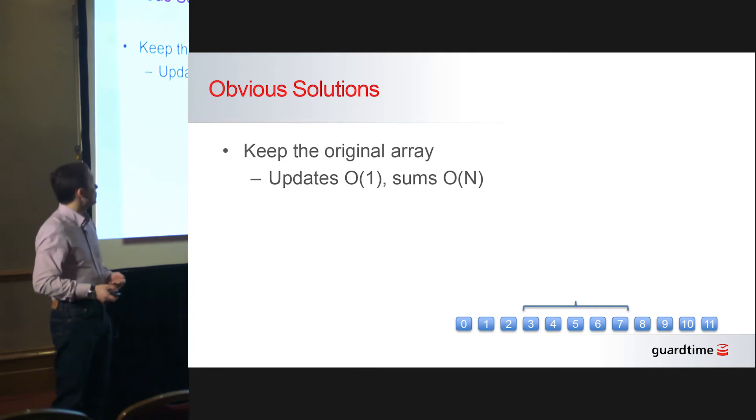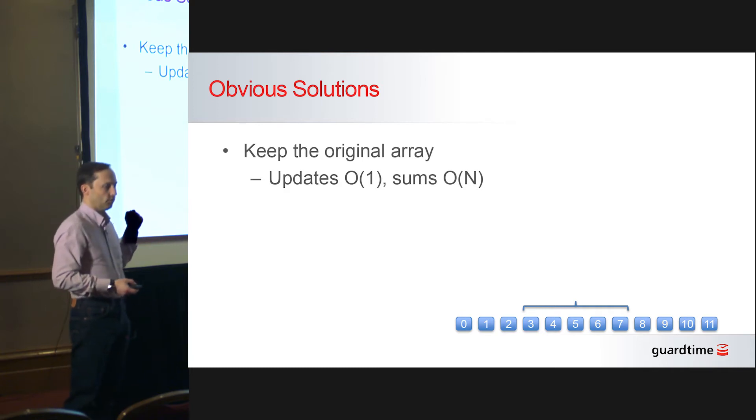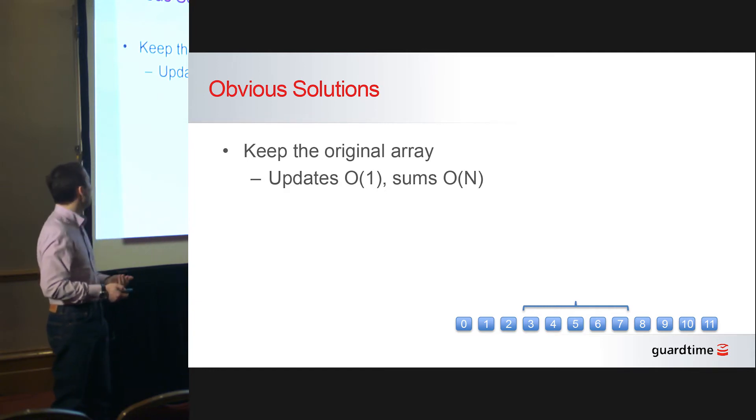An obvious solution just keeps an array. When you need to update an element, you just write into that element. When you need a sum of a subsequence of that array, you just scan over that subsequence and add up the elements, which means that the summing takes time linear to the size of the slice that you need to sum.